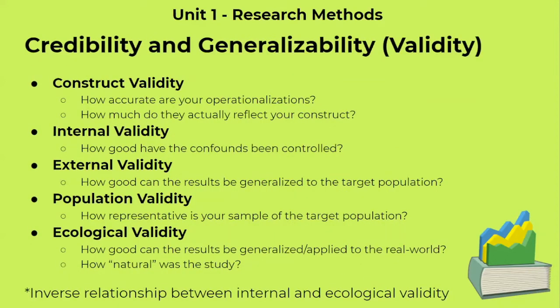Now we're going to talk about validity. There are five different types. The first is construct validity — constructs are concepts we define to observe in the environment, like anger, excitement, or love. The questions we ask are: how accurate are your operationalizations, and how accurately are you measuring your construct? For example, a good operationalization of anger would be punches per minute. The question is how much does that operationalization actually reflect your actual construct.